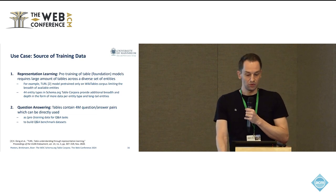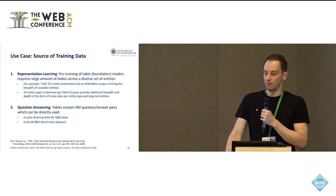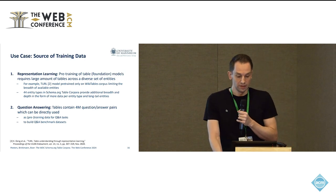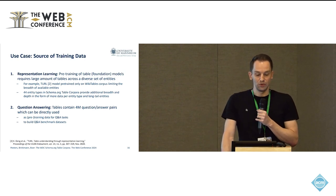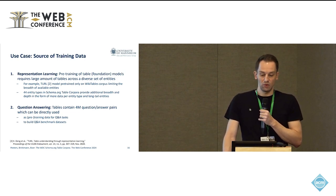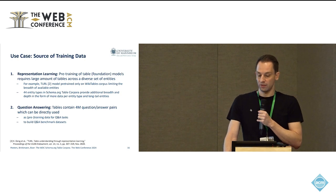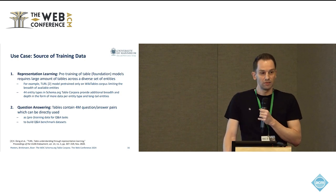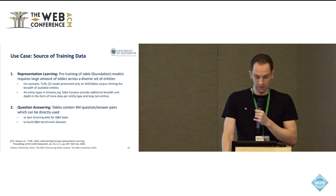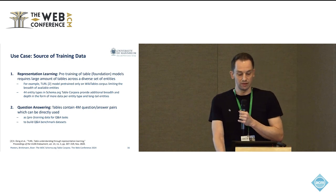The next use case is simply as a source of training data. I mentioned representation learning at the beginning — the pre-training of table foundation models requires large amounts of tables across a very diverse set of entities. Earlier approaches like the TURL model pre-trained only on the WikiTables corpus, which limits the breadth of available entities. Our corpus provides 44 entity types with additional breadth and depth in the form of more data and also some long-tail entities that you wouldn't find in Wikipedia.